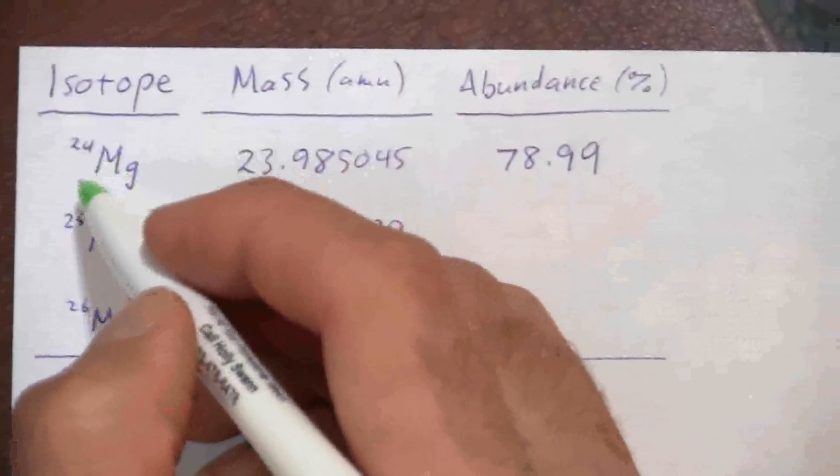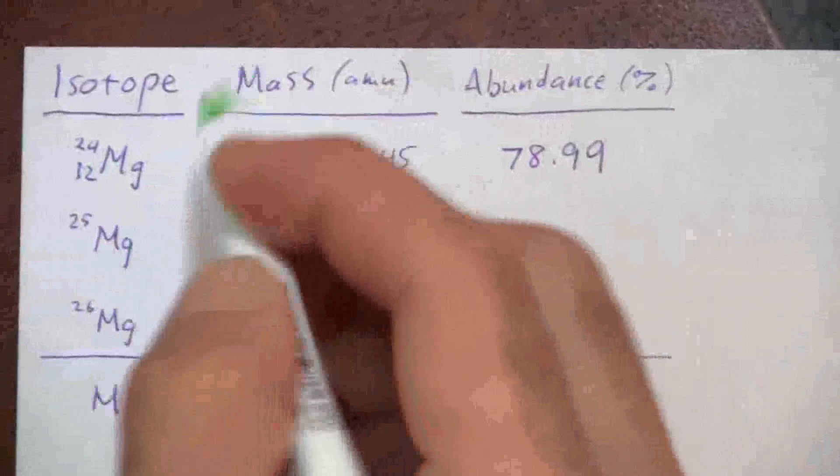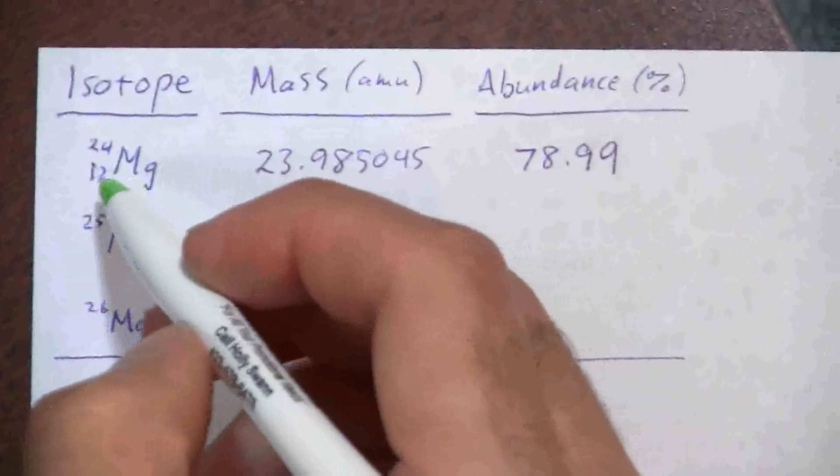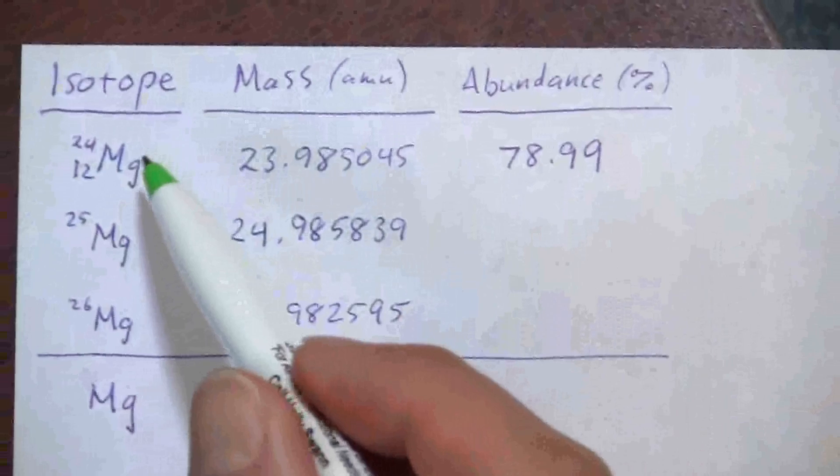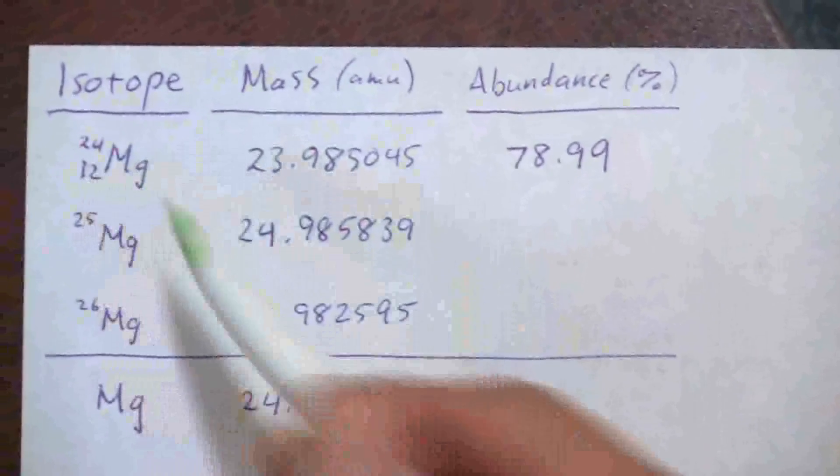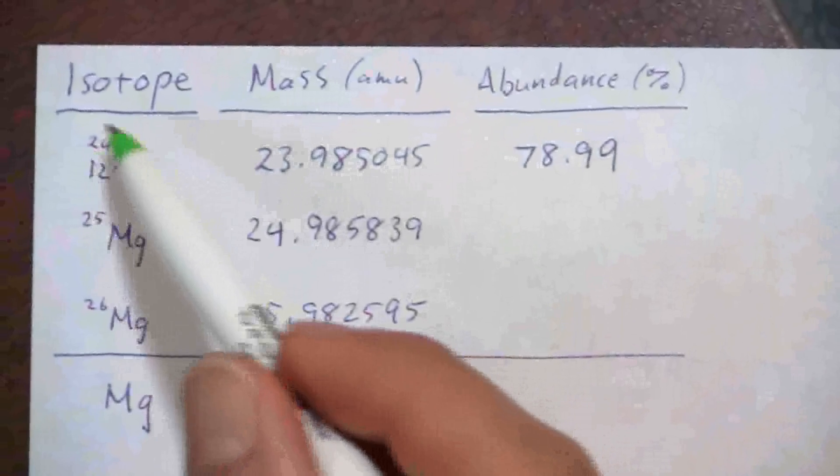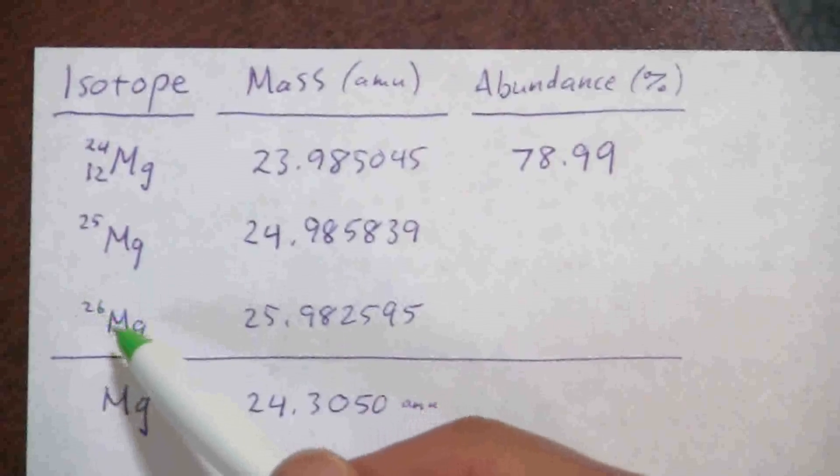You'll notice I'm not including the number of protons there. I could write that in, but a lot of times I'm not too concerned about that because the symbol really tells us what element it is and we know how many protons it has. We're not referencing that, but it is good to know the mass number.